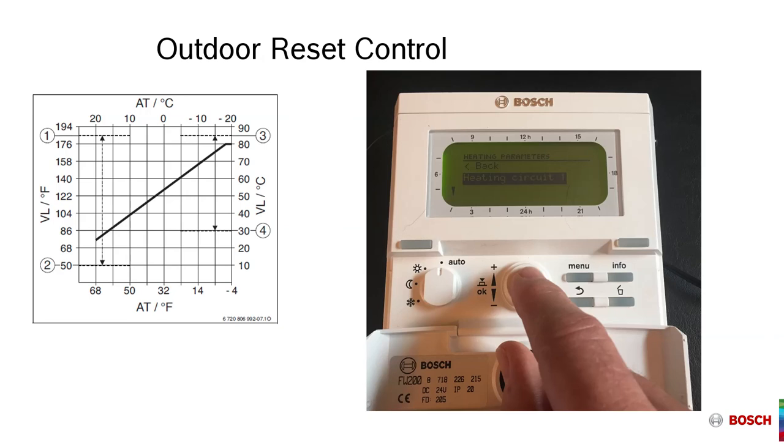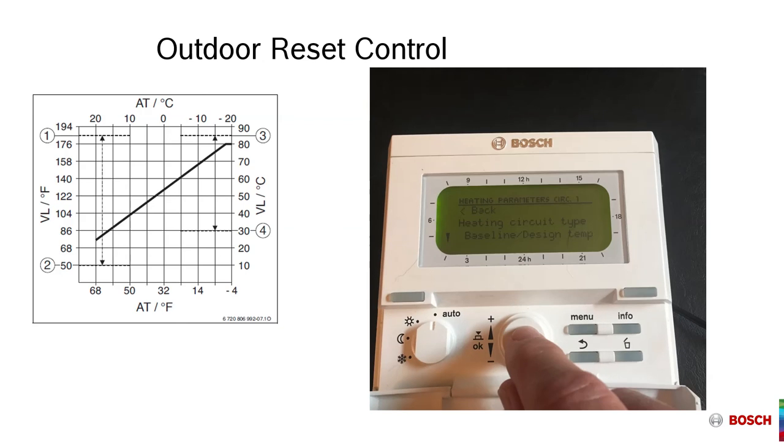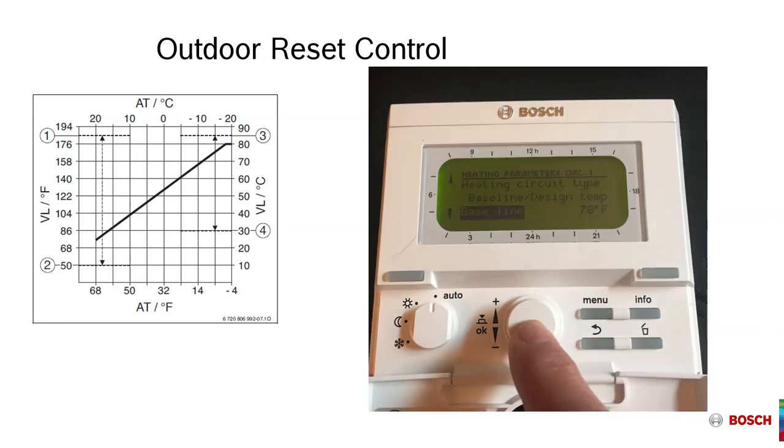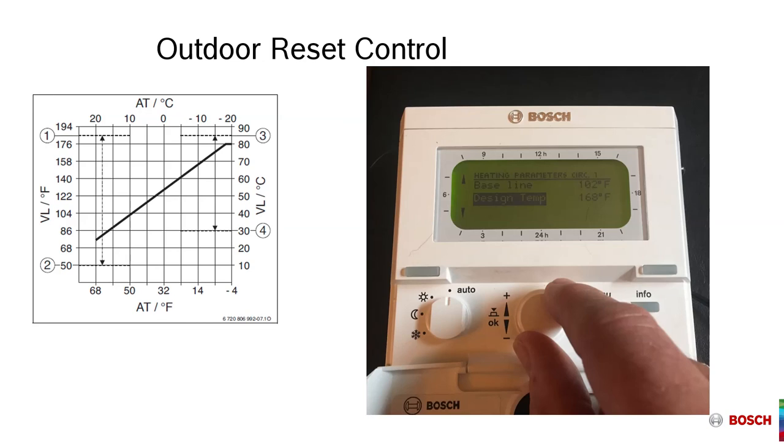Brings us to heating circuit one. From heating circuit one, selecting heating circuit one, you can scroll from radiators to baseline and design temperature. Again, pressing in or pressing OK on the control will bring up the current baseline temperature. So if we want to increase from that 78 degree baseline temperature, we scroll up. And again, we could scroll up to maybe that 102 degree temperature. Selecting the 102 degree temperature, we can then go on to design temperature.